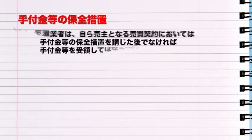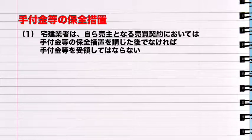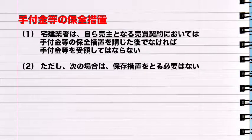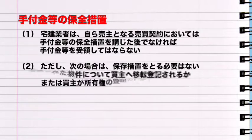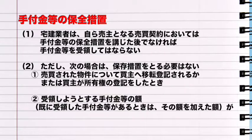手付金等の保全措置について。1. 宅建業者は自ら売り主となる売買契約においては、手付金等の保全措置を講じた後でなければ手付金等を受領してはならない。2. ただし、次の場合は保全措置を取る必要はない。①売買された物件について、買い主へ所有権移転登記がされるか、または買い主が所有権の登記をしたとき。②受領しようとする手付金等の額（すでに受領した手付金等があるときはその額を加えた額）が一定基準以下のとき。